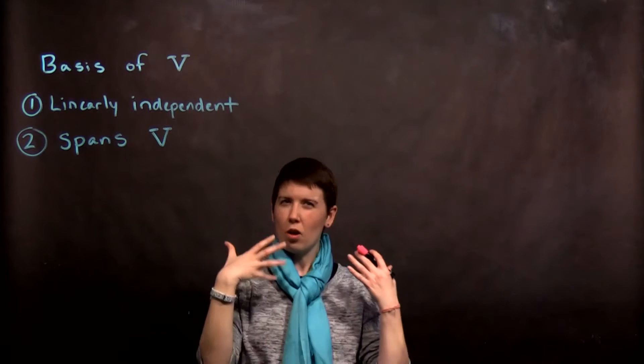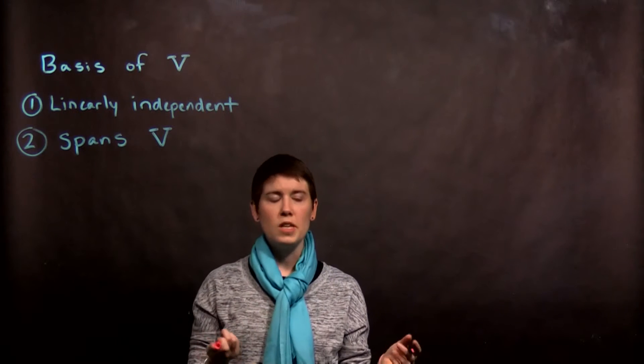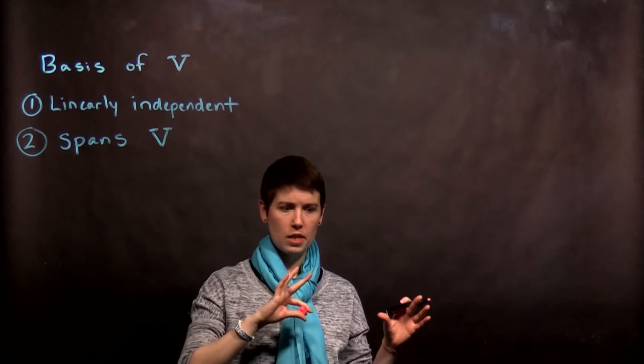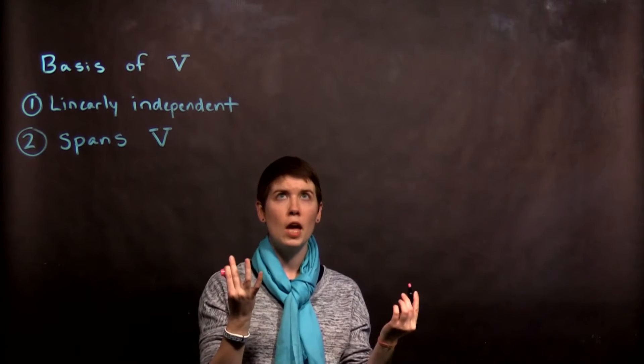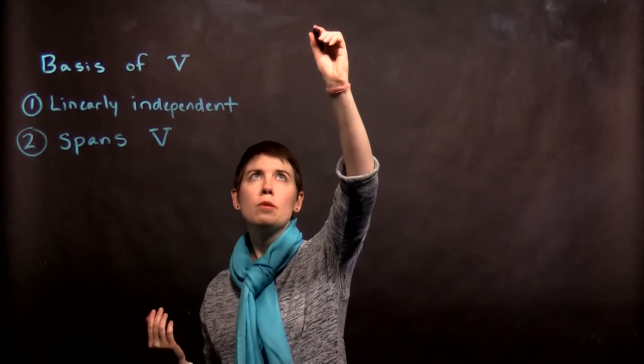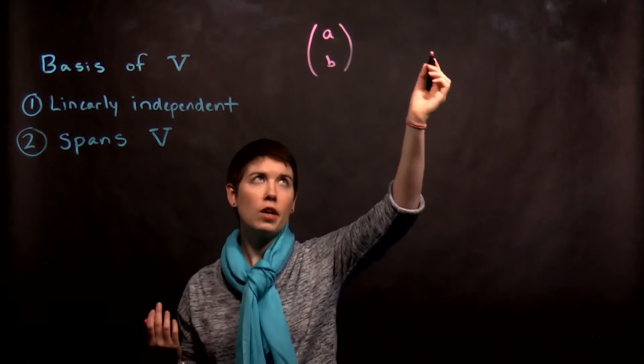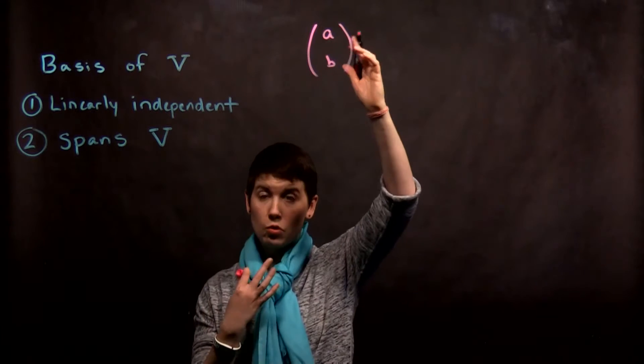I'll give you some more concrete examples of what this means. When we think about our vector space we can represent this in terms of our column vectors. For instance maybe we have a two element vector.